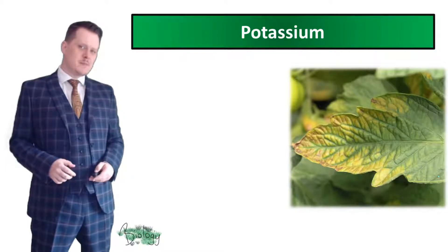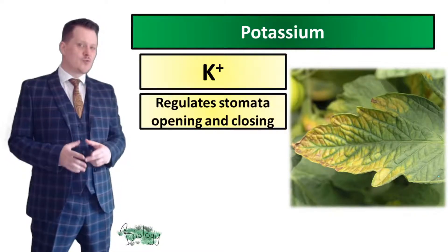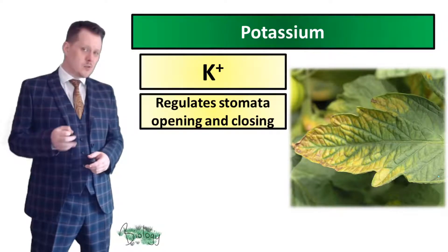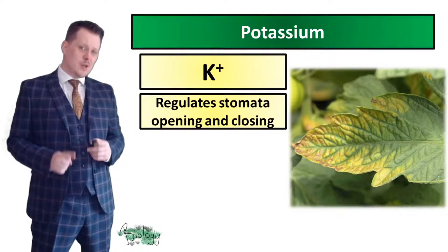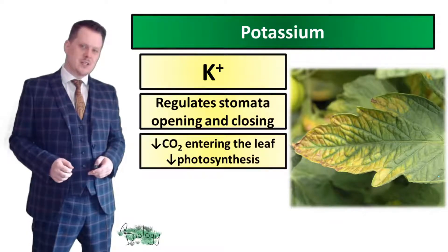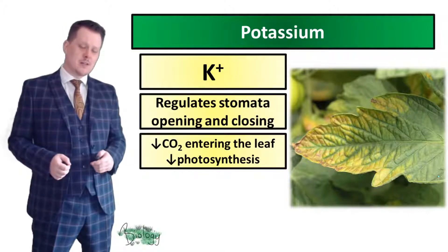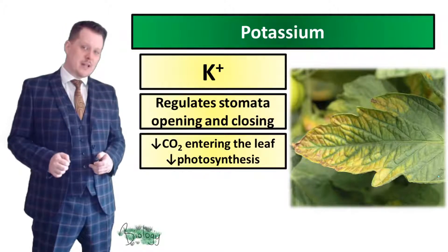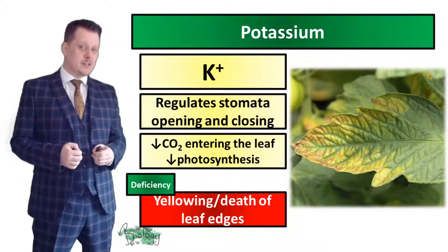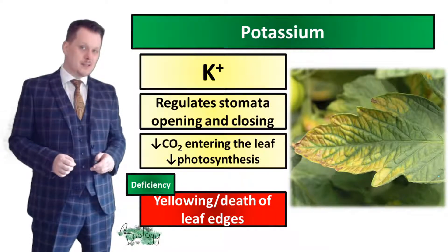Looking at potassium, its ion is K+. Its function is to regulate the opening and closing of the stomata — those little holes in the bottom of the leaf that allow for gas exchange. If there is a potassium deficiency there will be less carbon dioxide entering the leaf through the stomata and you'll have a lower rate of photosynthesis. Over a long period of time the edges of the leaf will also begin to die.